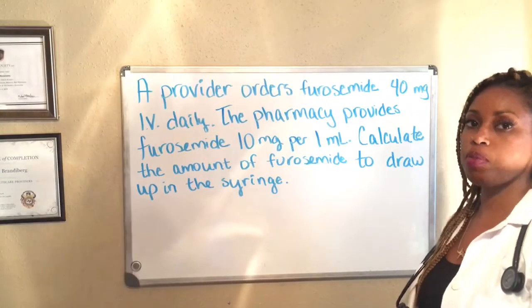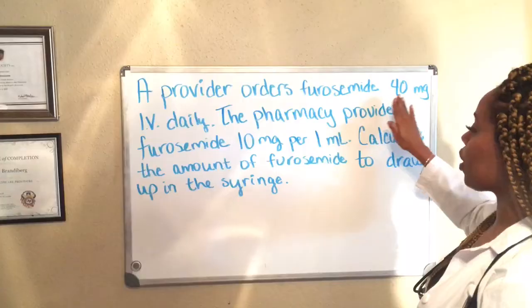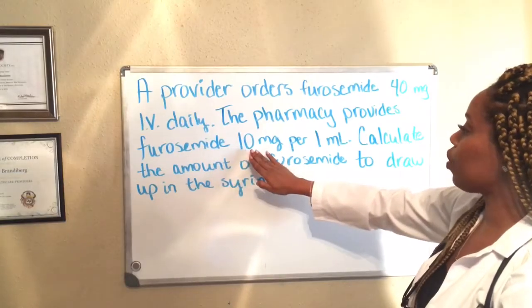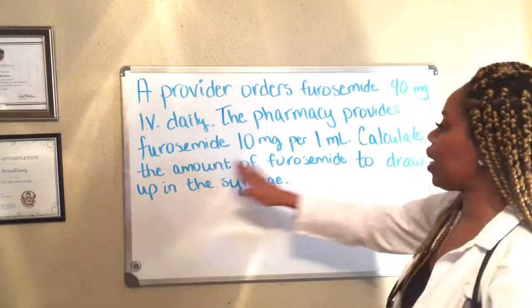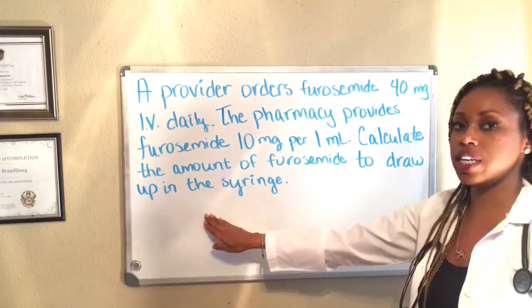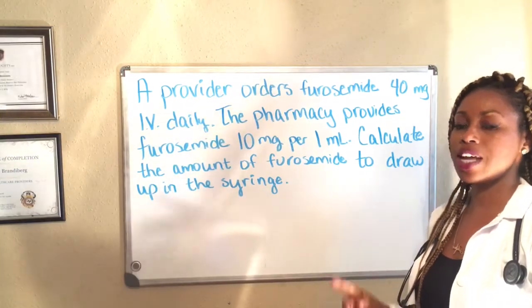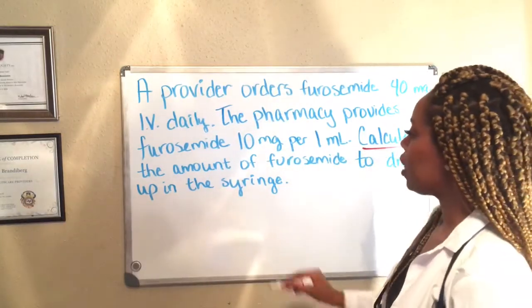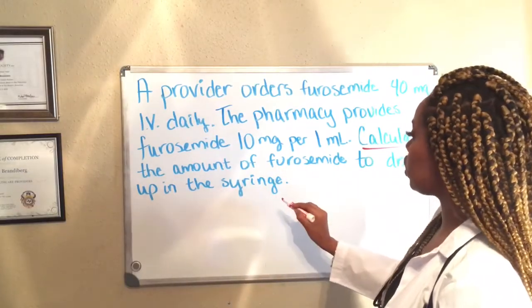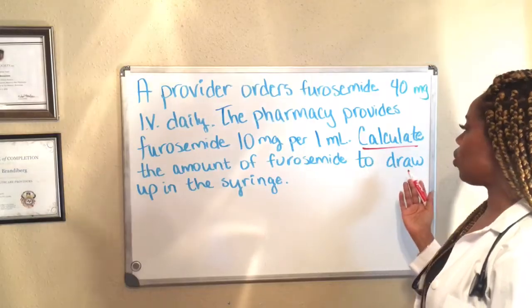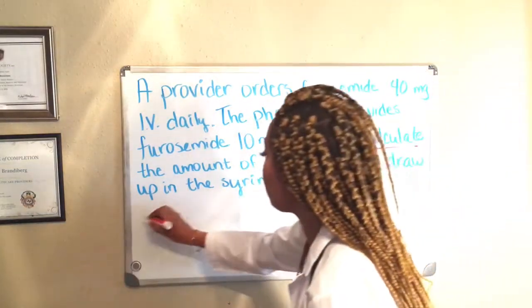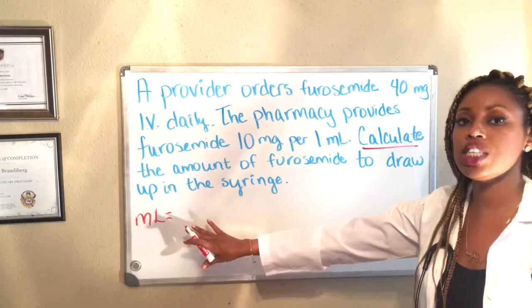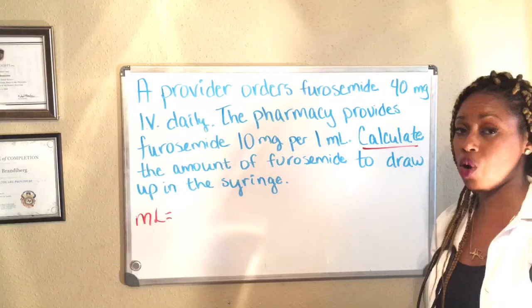So this problem reads: a provider orders furosemide 40 milligrams IV daily. The pharmacy provides furosemide 10 milligrams per one milliliter. Calculate the amount of furosemide to draw up in the syringe. Like all the other problems, I always set up my equation with what the problem is asking me for.